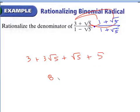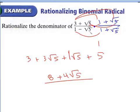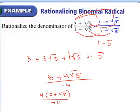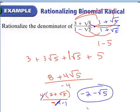Combining like terms on top gives 8 plus 4 radical 5. On the bottom, since they're conjugates: 1 times 1 is 1, and the last terms give negative radical 5 times radical 5 which is negative 5, so the bottom is 1 minus 5 equals negative 4. We can factor out a GCF of 4 from the top to get 4 times (2 plus radical 5) over negative 4. The 4 and negative 4 reduce, leaving negative 1, so the final answer is negative 2 minus radical 5.